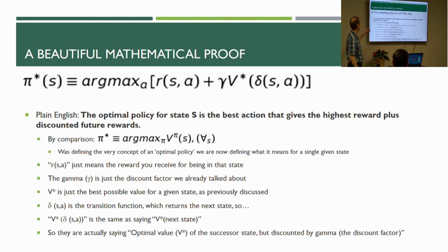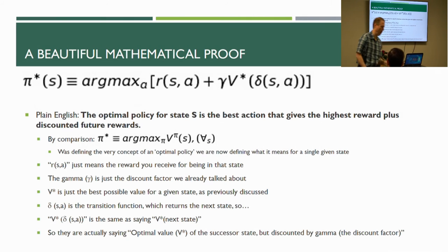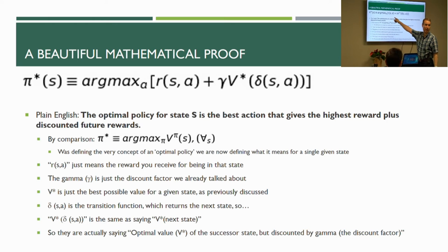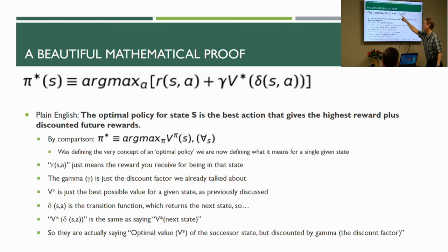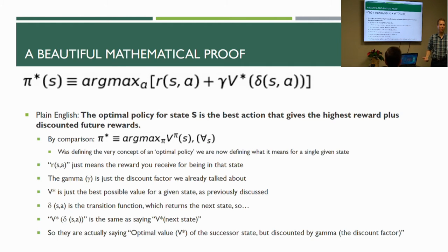The way you define the optimal policy for a single state S: you take the argmax of the reward at that state taking action A, plus the discounted value of the optimal policy from that point forward. The transition function — delta(S, A) — means whatever state you end up in when taking action A. It's self-evidently true given that you're assuming you have the optimal policy.